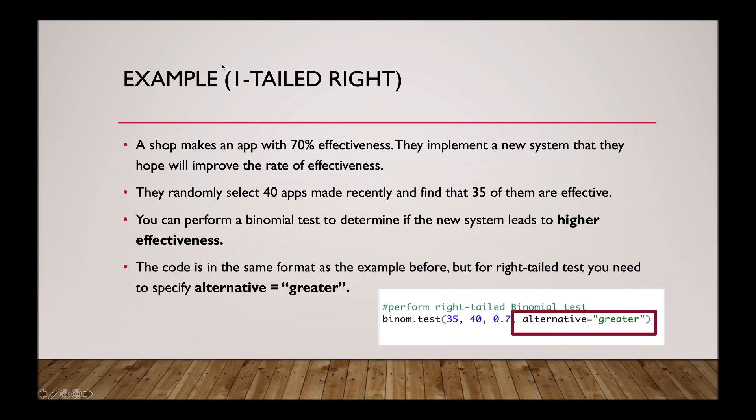And finally, here is an example of a right-tailed test. For example, if a shop makes an app with 70% effectiveness, then they implement a new system that they hope will improve the rate of effectiveness.